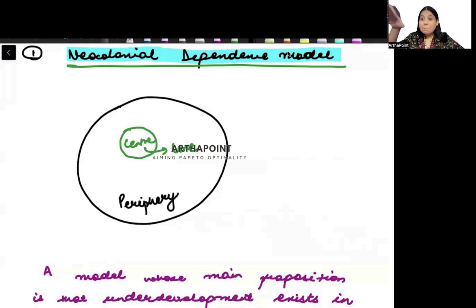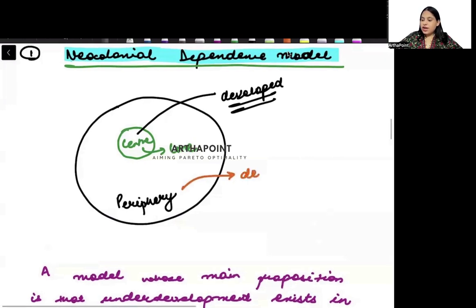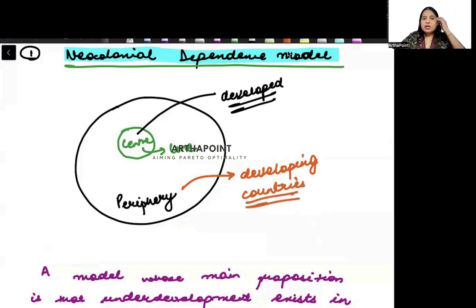The center consists of the developed countries, while the developing countries are called the periphery. So developed countries are called the center, developing countries are called the periphery.